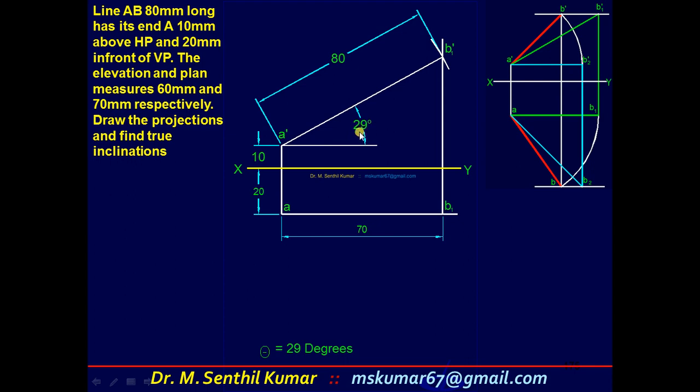Follow the same way. 60 is the front view length - if this is 60, this is also 60. Draw this first, draw a projector. Already the compass is set at 80, so cut an arc.